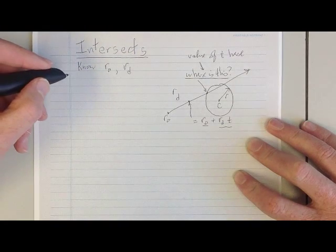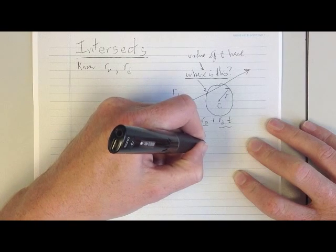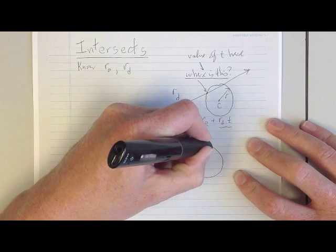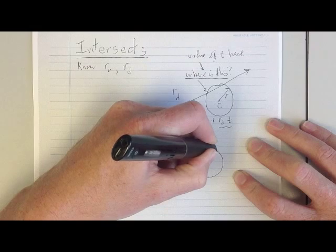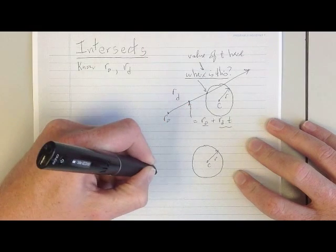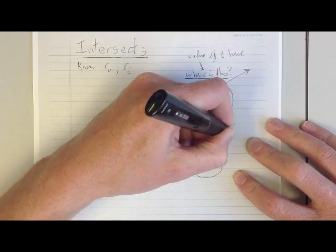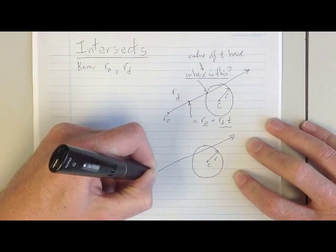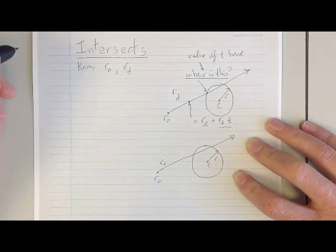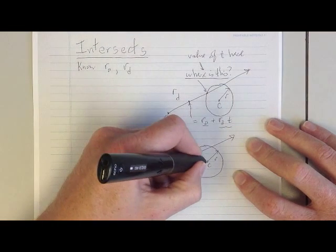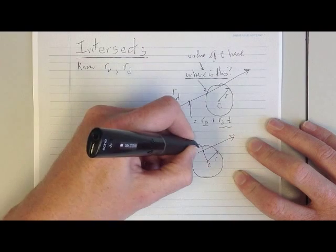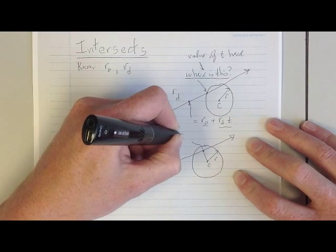So when we do our intersection calculation, before we figure out where the intersection is, we're going to figure out the value of T at the intersection. Once we know the value of T at the intersection, we can figure out where the intersection is, and we'll know where the intersection is in the world.